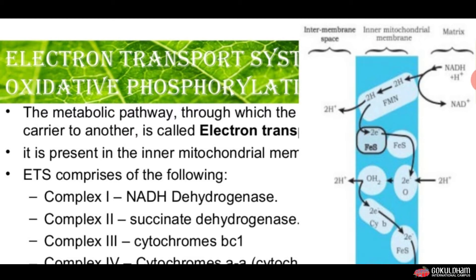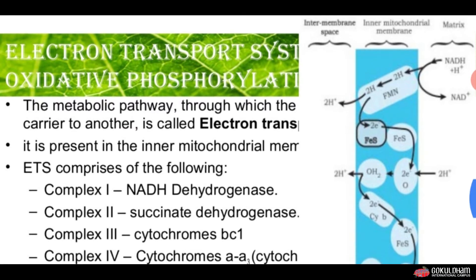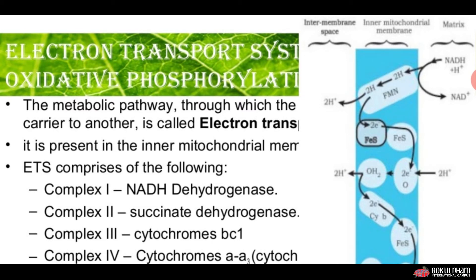You can see in this figure that it has three regions. The blue center region shows the electron transport system present inside the inner mitochondrial membrane. The left side shows the intermembrane space, the right side shows the matrix. In the matrix, the Krebs cycle takes place and produces NADH, which then enters the electron transport system.